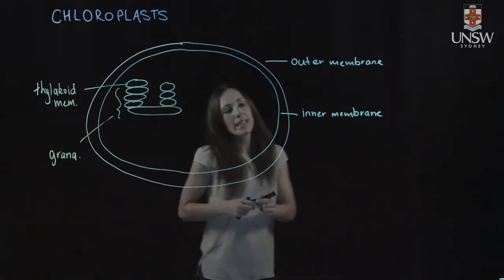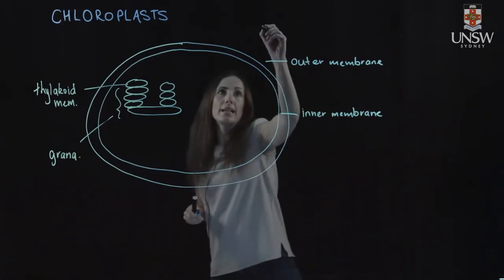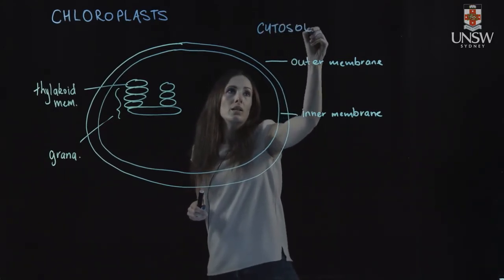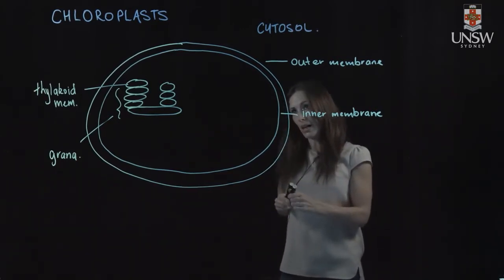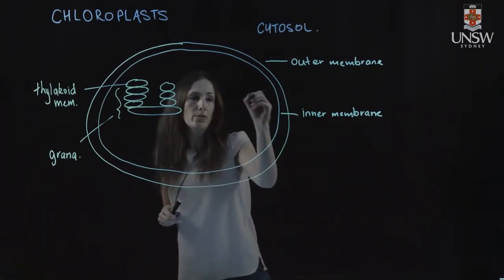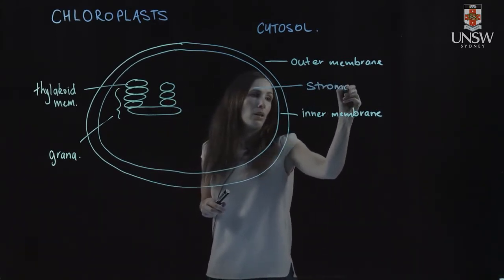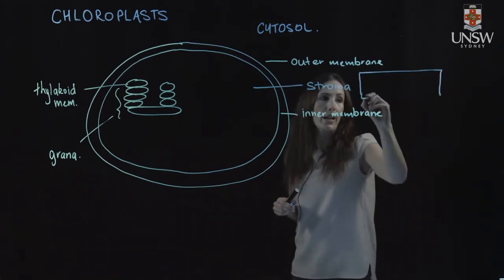So remember that this is an organelle in particular photosynthetic eukaryotic cells. So the outside here is our cytosol. And then we have the two membranes. And then the inside of here is called our stroma.